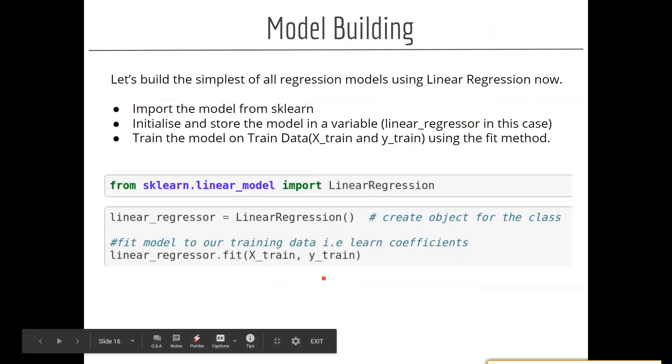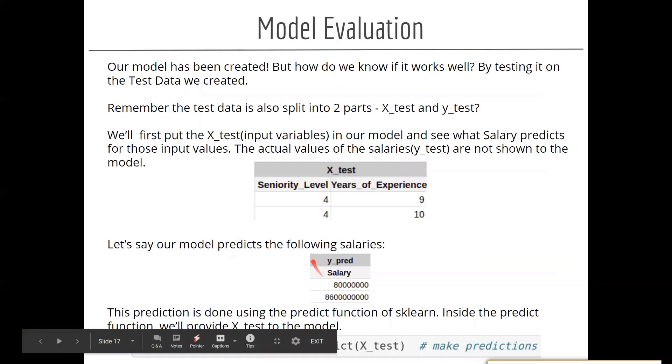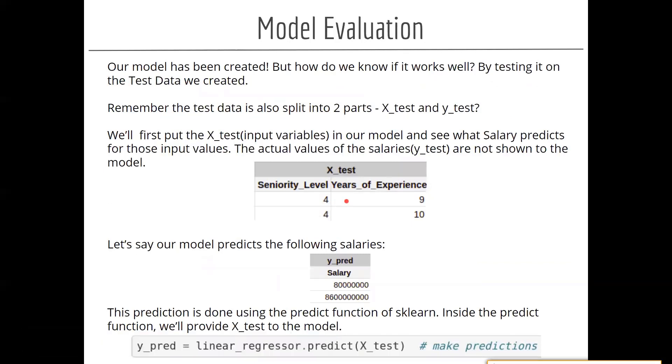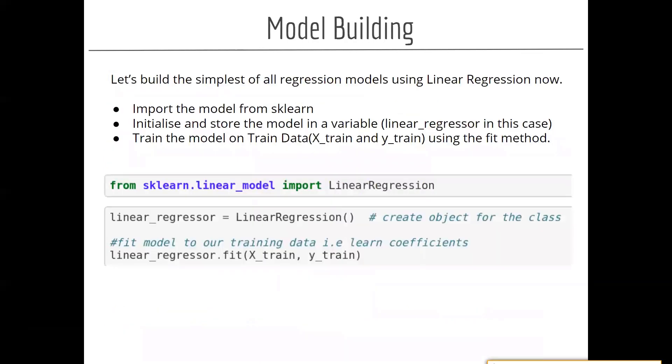Train dataset is nothing but x_train and y_train. X is our input features, y_train is our target variable. It's done. Now comes the model evaluation. Now you need to - you have built a model, yes, I mean you're done with model building in a single step.